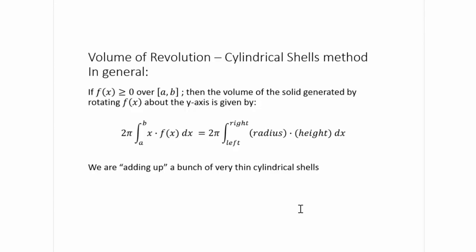In general, if we have a positive function over [a, b], the volume of the solid generated by rotating the function about the y-axis is given by 2π times the integral from a to b of x times f(x) dx. Here, x is the radius of the cylindrical shell, f(x) is the height of the cylindrical shell, and we integrate from left to right — adding up a bunch of very thin cylindrical shells.